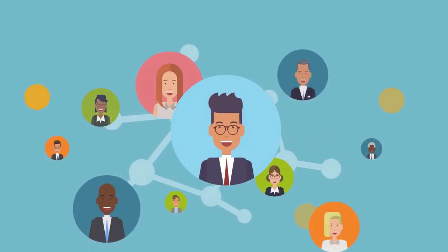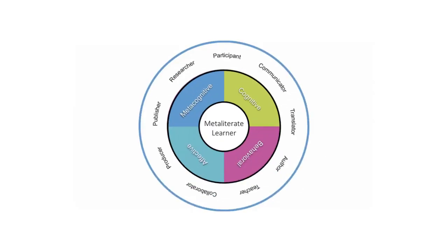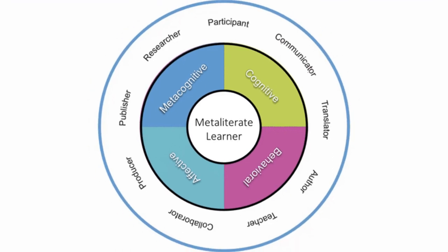As a meta-literate learner, you are an active producer of information who is empowered to take charge of your own story and tell it in a way that an audience will relate to. You play many different meta-literate learner roles. You are a communicator of information who thinks carefully about the content of your story and how to tell it to a specific group or perhaps a wider audience. You are a researcher who investigates a topic to discover reliable sources of information to support the credibility of your story. You are a translator of information who adapts ideas from one form to another or who translates one media format into another.